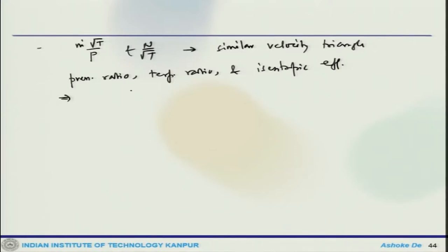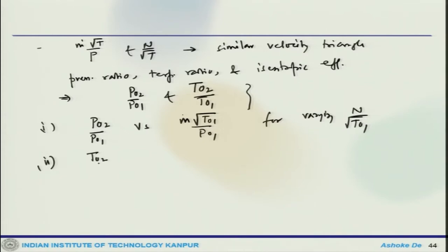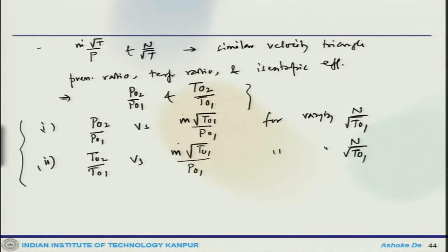This is what the non-dimensional method of characterizing compressor performance implies. It yields the same P₀₂/P₀₁ and T₀₂/T₀₁. One can look at two plots: (1) P₀₂/P₀₁ versus m-dot√T₀₁/P₀₁ for varying N/√T₀₁, and (2) T₀₂/T₀₁ versus m-dot√T₀₁/P₀₁ for varying N/√T₀₁. These two plots would be sufficient to provide the entire characteristics of the compressor.